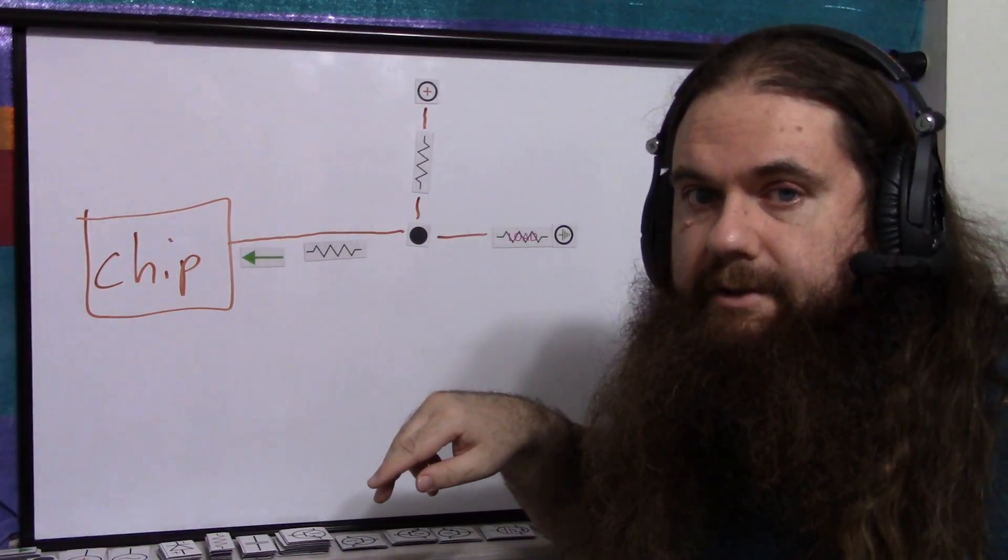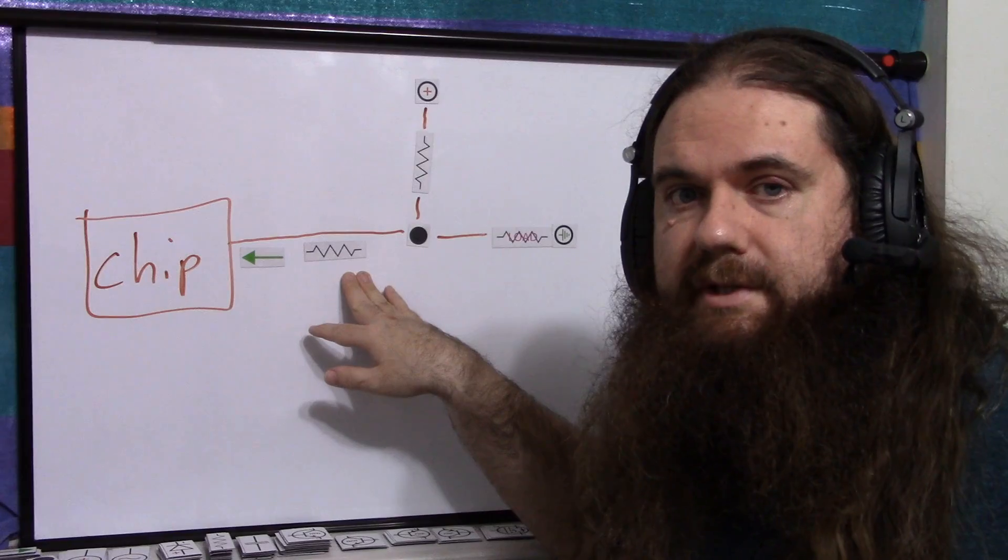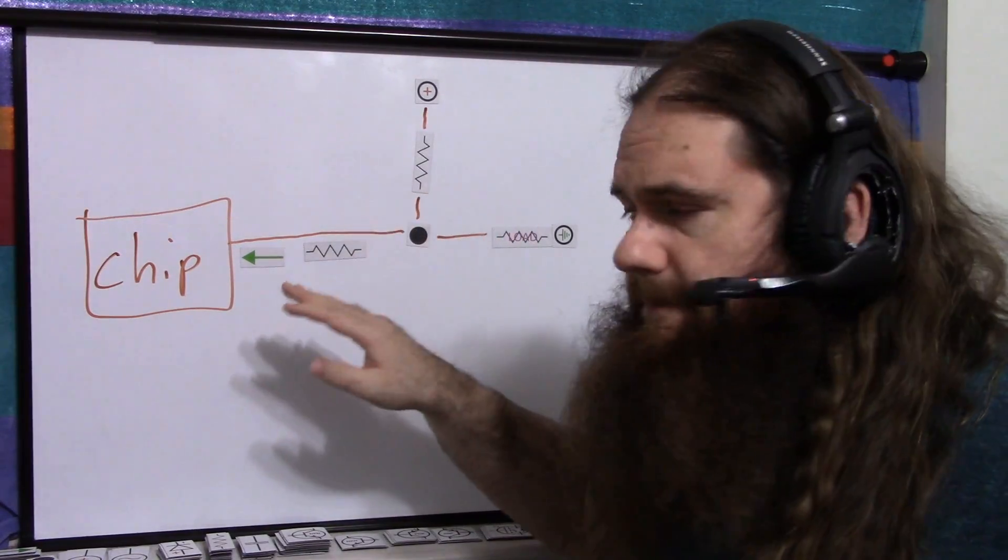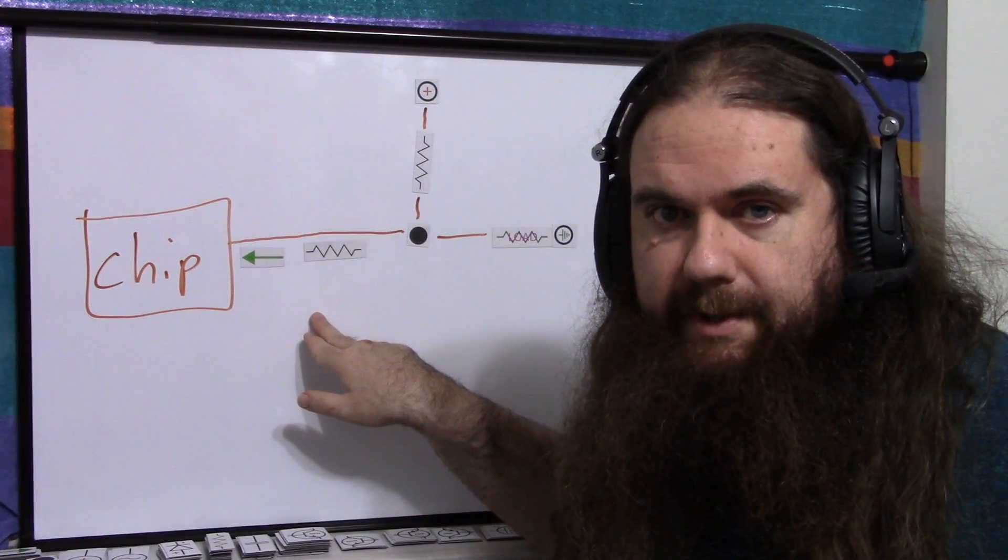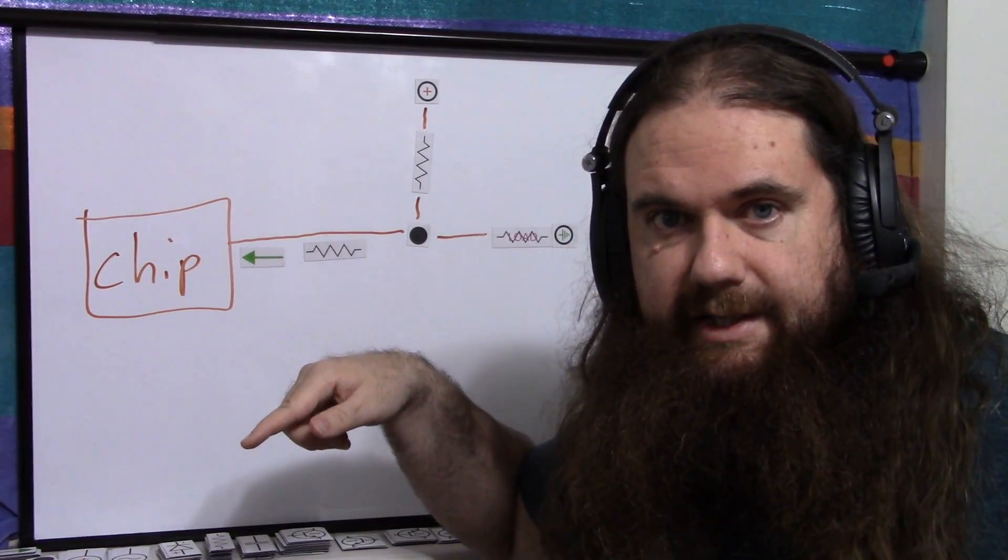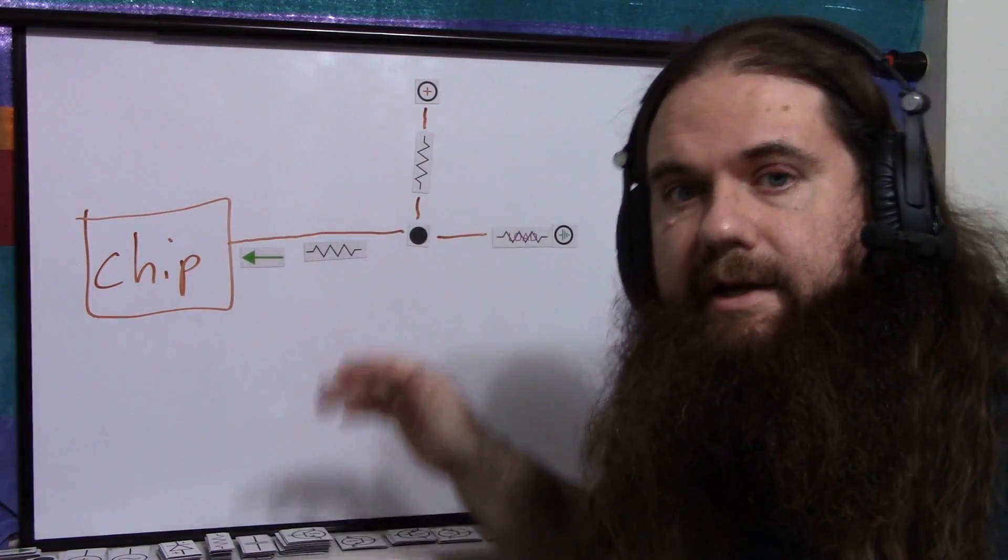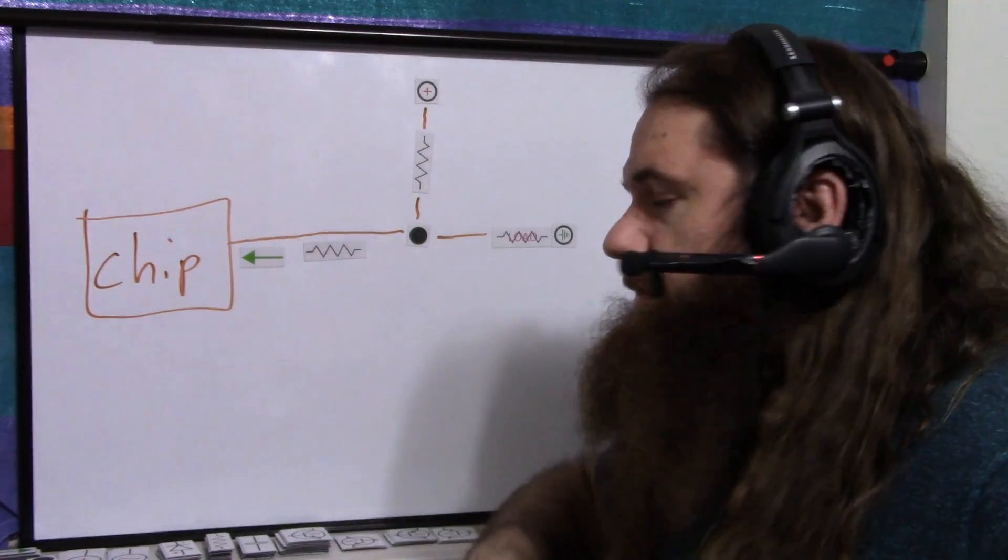When I did the 3-ohm resistor, it brought the low up to like, what was it, 3 volts or something? Then 3-ohms is way less than the output impedance, even sinking in. So it starts winning, and it brings the voltage up. That's what's going on here.